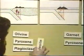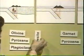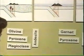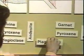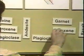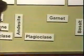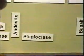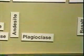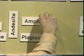The rock that's then produced is andesite, composed of plagioclase and amphibole, essentially.